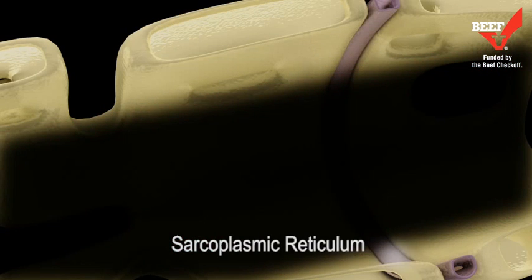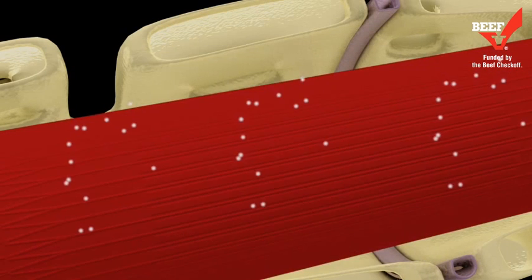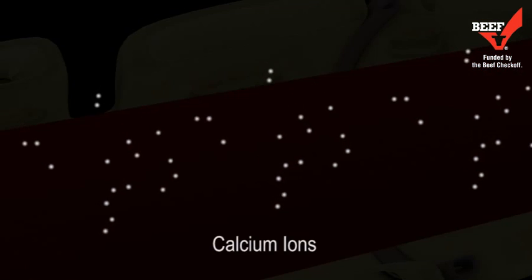Then, calcium ions are released from the sarcoplasmic reticulum terminal cisternae into the muscle cell.